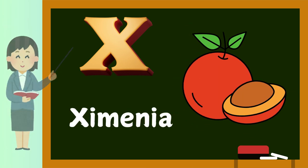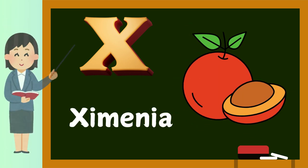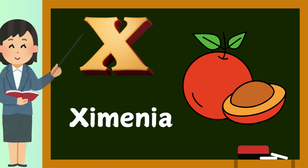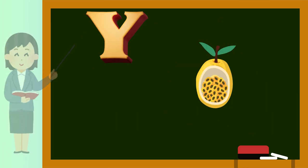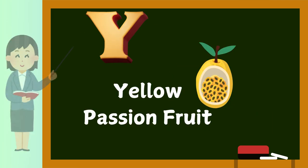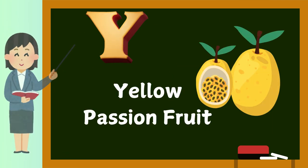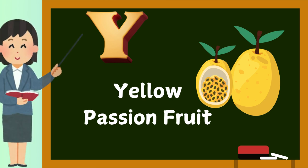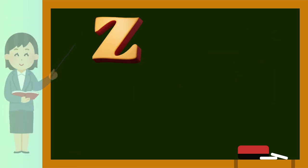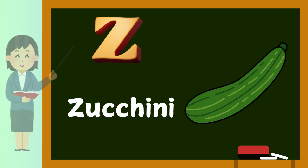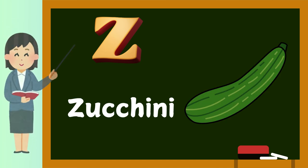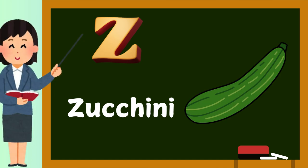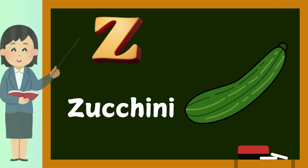X. X is for zymenia. Y. Y is for yellow passion fruit. Z. Z is for zucchini — technically a fruit.